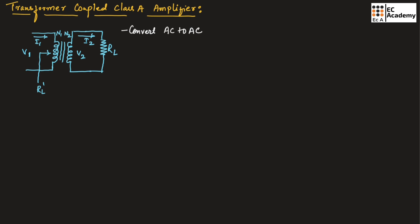In a transformer, if V2 is greater than V1, in that case we call the transformer a step-up transformer. And if V1 is greater than V2, in that case we call the transformer a step-down transformer.